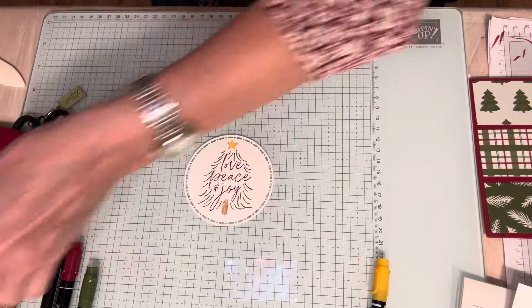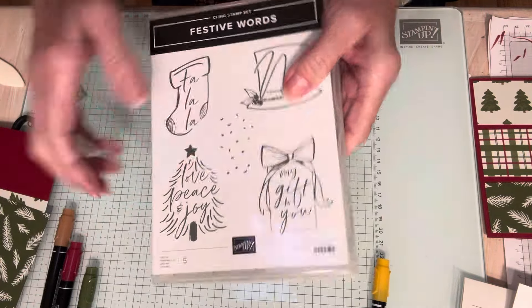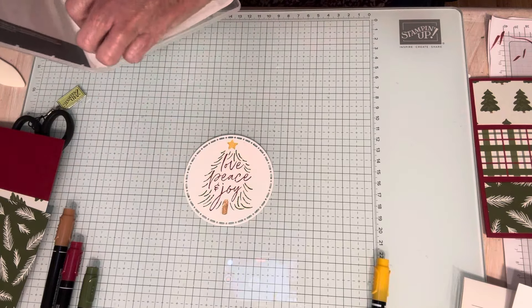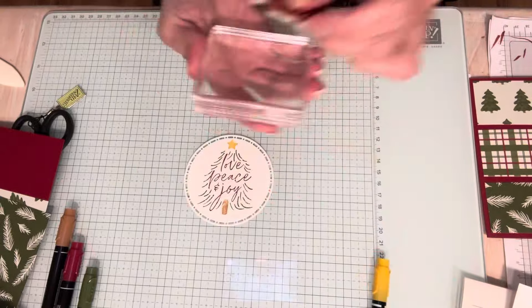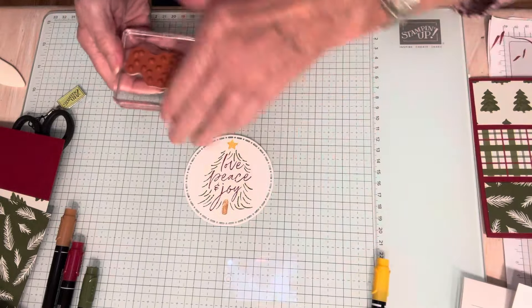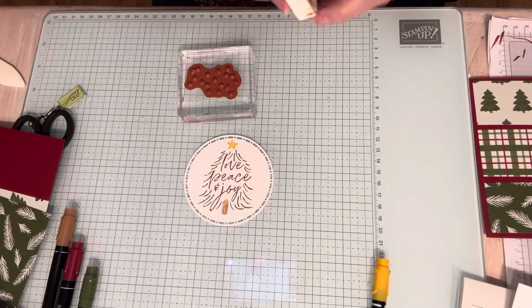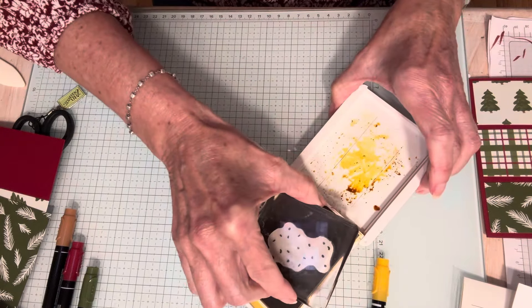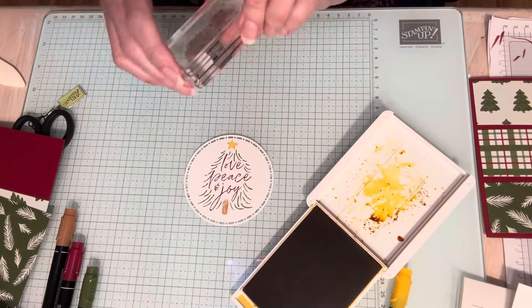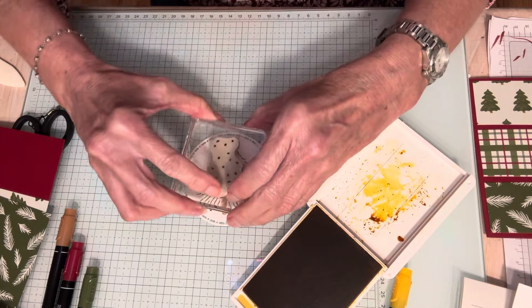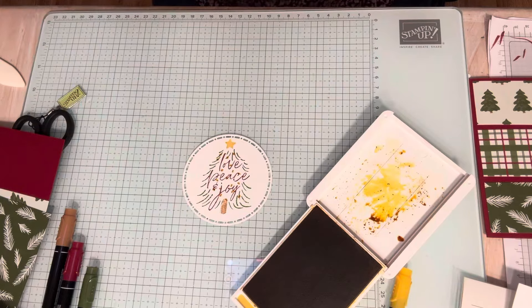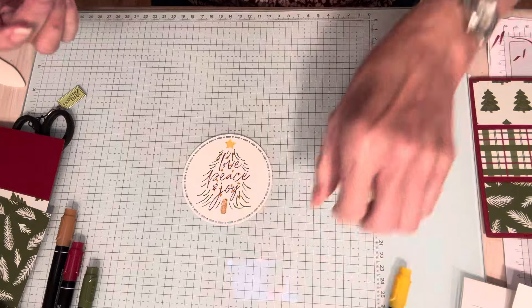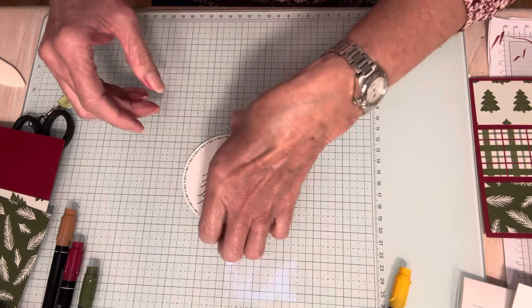So now what I'm going to do is there's another stamp in here and it's this one. It's like the little speckles. And I'm going to do that next and I'm going to just add some, I'm going to call them lights, to the tree. And I'm going to stamp that in Crushed Curry. So I'm just going to add those on here now. So just little speckles, kind of like there were lights on the tree. I don't know if that's what it's designed for, but that's the way I'm using it.